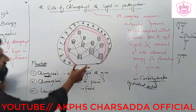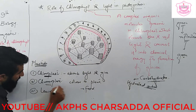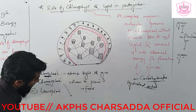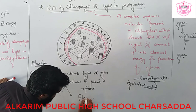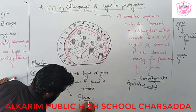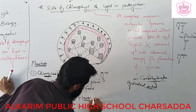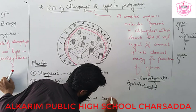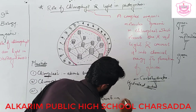The chromoplast is the type of plastid which gives different colors to the flower — simply, it gives bright color to flowers which attracts insects for pollination.